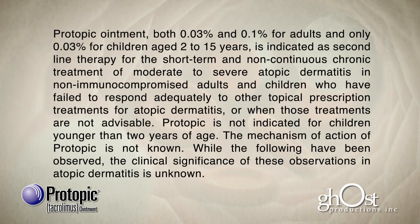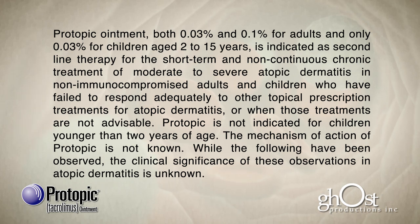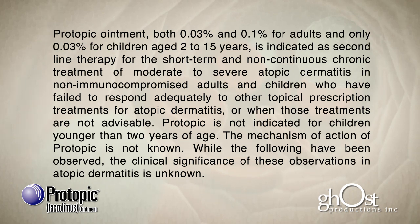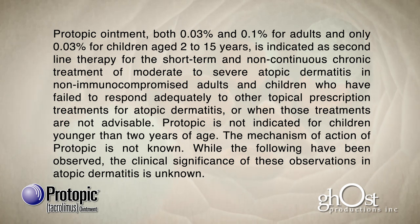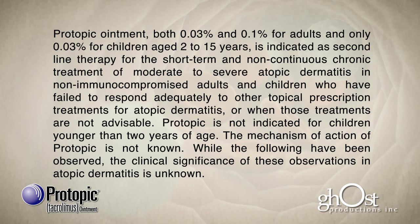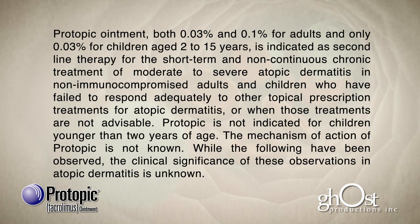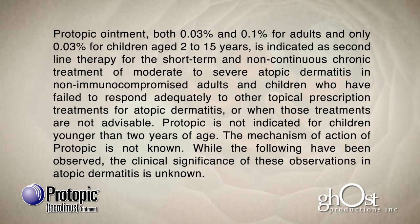Protopic ointment, both 0.03% and 0.1% for adults, and only 0.03% for children aged 2 to 15 years, is indicated as second-line therapy for the short-term and non-continuous chronic treatment of moderate to severe atopic dermatitis in non-immunocompromised adults and children who have failed to respond adequately to other topical prescription treatments for atopic dermatitis, or when those treatments are not advisable. Protopic is not indicated for children younger than 2 years of age. The mechanism of action of Protopic is not known, and while the following have been observed, the clinical significance of these observations in atopic dermatitis is unknown.